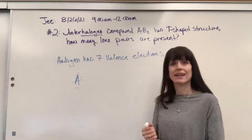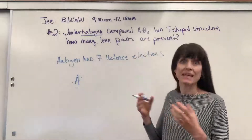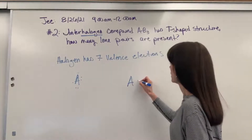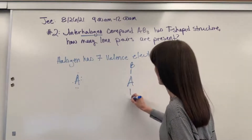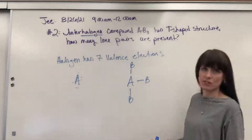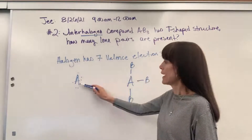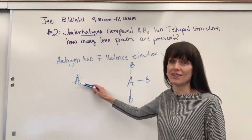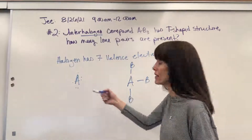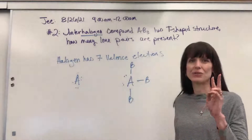So let's do our expanded octet for this halogen. I'm going to give my three B atoms what they need — they're each going to need one electron. So let's give one electron to B, another electron to B, and another electron to B. That takes care of all three B atoms. Now remember, A — the halogen — has seven valence electrons. We used three of them, so four electrons are left, which means there are two lone pairs.